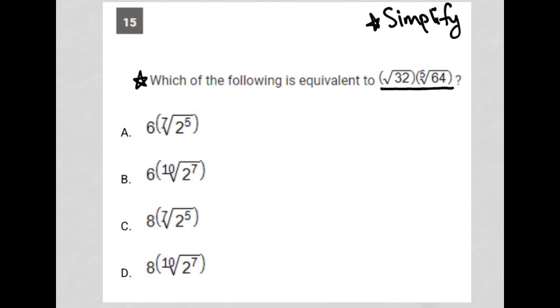So how do I simplify this question? First of all, let's read it. It says, which of the following is equivalent to square root 32 times fifth root of 64?